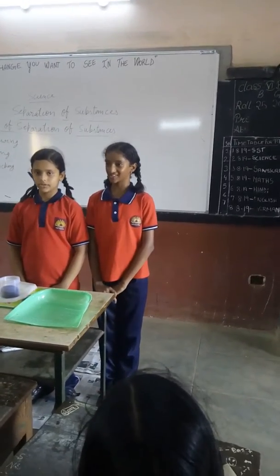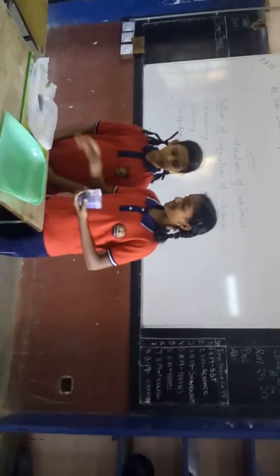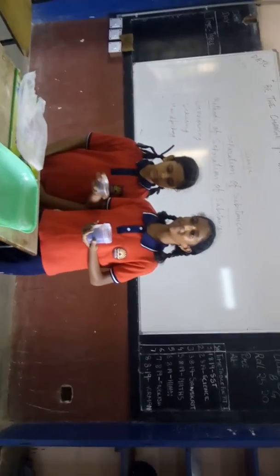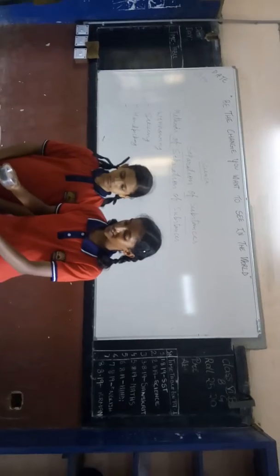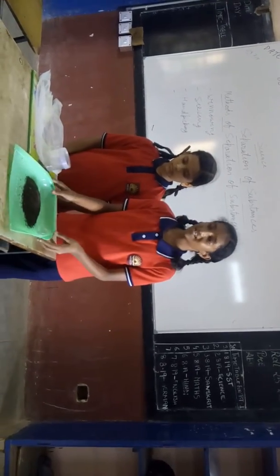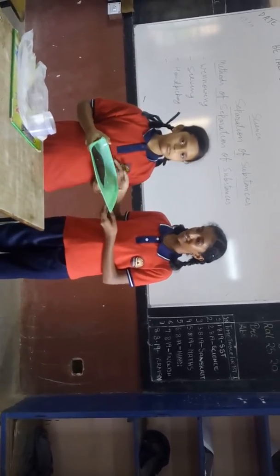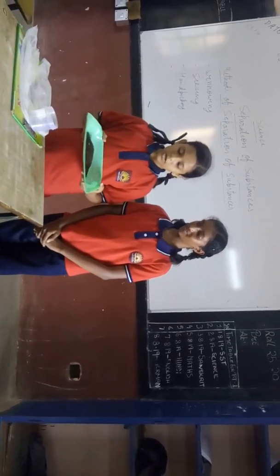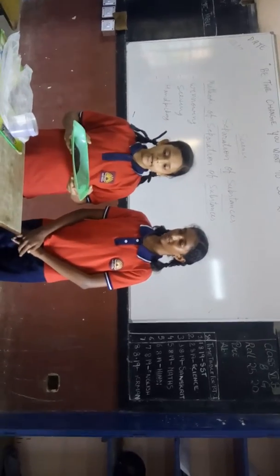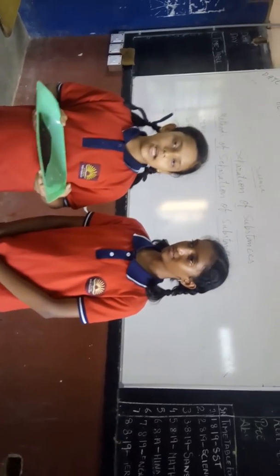Hello, my dear friends and teachers. Today we are going to show the process of winnowing. Here we have tea powder and mustard seeds. Now we are going to mix the substance, and in this process, Kanika will pour the mixture of tea powder and mustard seeds. And I am going to blow the grain, by which the mustard seeds and tea powder will get separated.